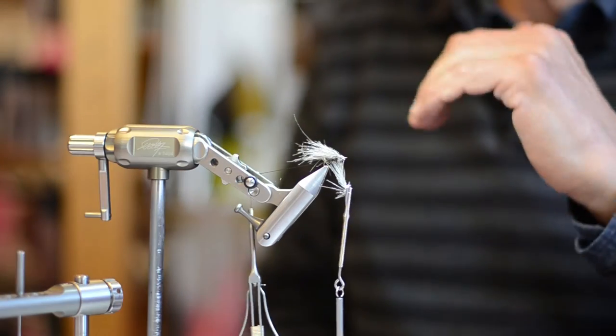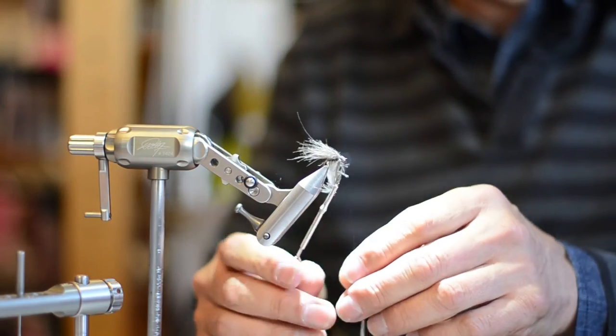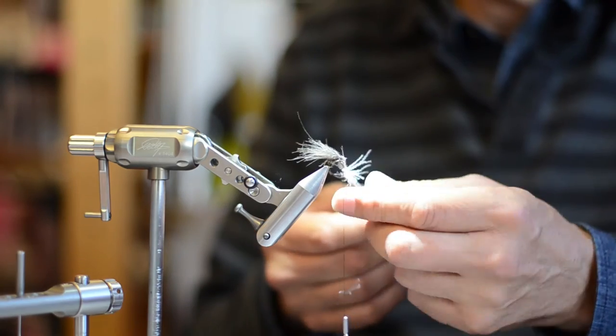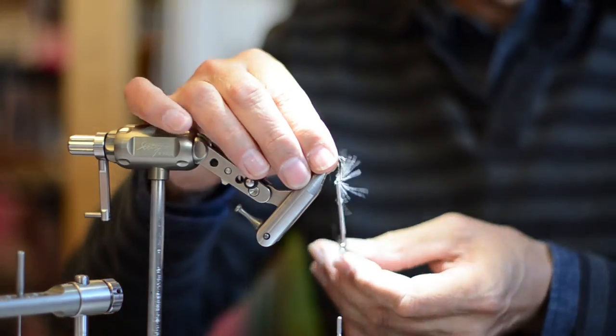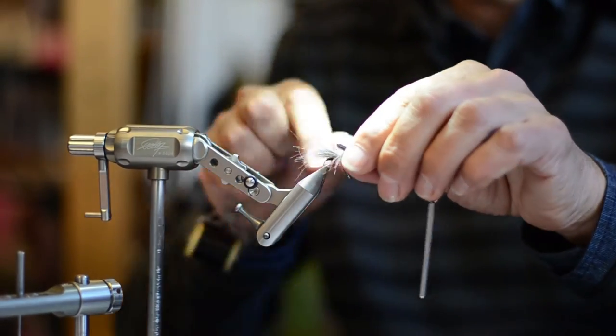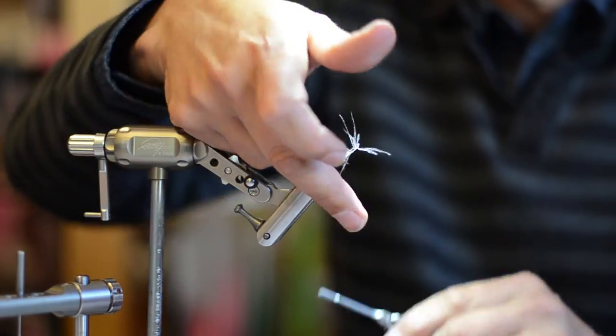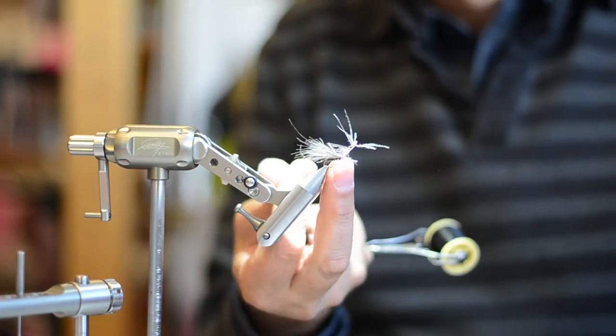Then right under that you can trim the excess and add the thread under. Now the only thing we have to do with the remaining section of the feather is very simple. You just twist and wrap around to make the thorax and then finish like this.